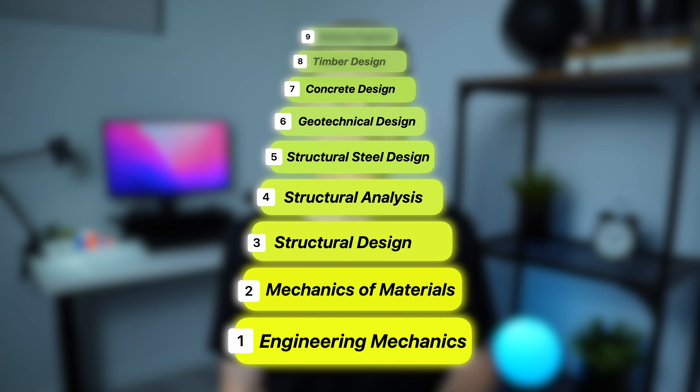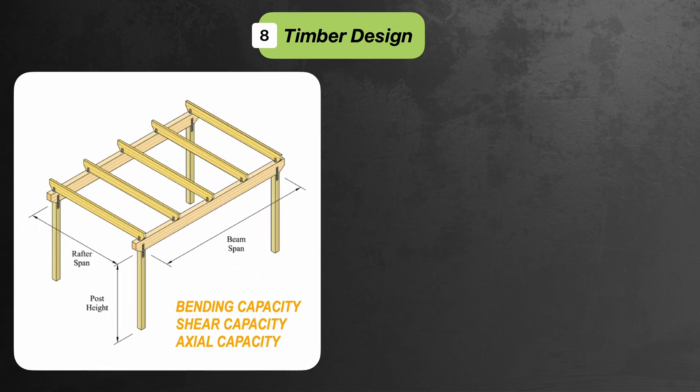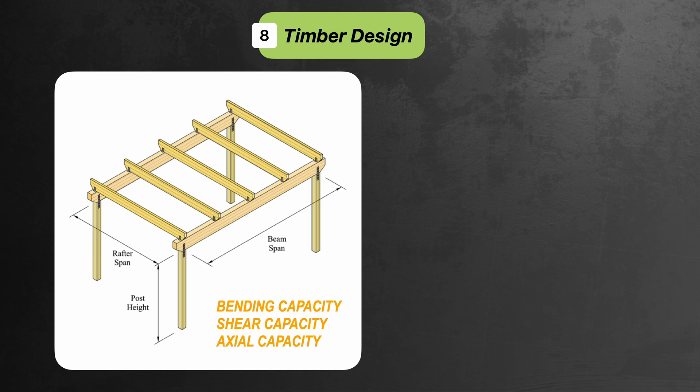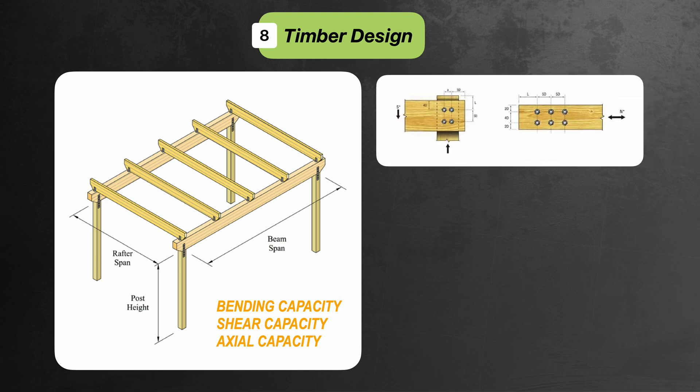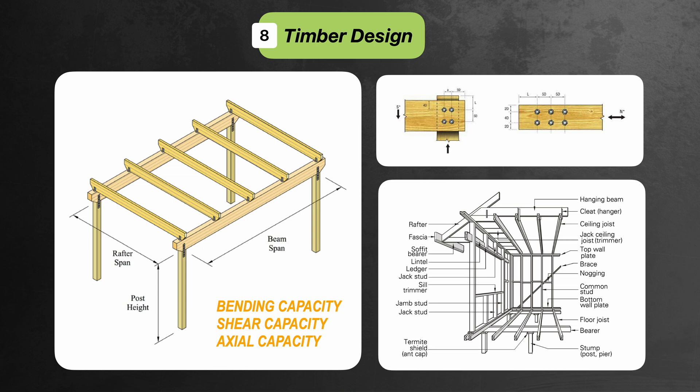Next up is timber design, and this has to be the most under-emphasised topic at university relative to how common it is in practice — especially in residential design here in Australia. You'll need to learn how to calculate the bending, shear and axial capacity of timber beams and columns, how to calculate the capacity of bolted and screwed connections, and learn about different timber elements like studs, noggings, rafters and lintels. In Australia, two key standards are AS 1684.2 and AS 1720.1, which together cover member and connection design, bracing and tie-down design, and how timber systems go together.